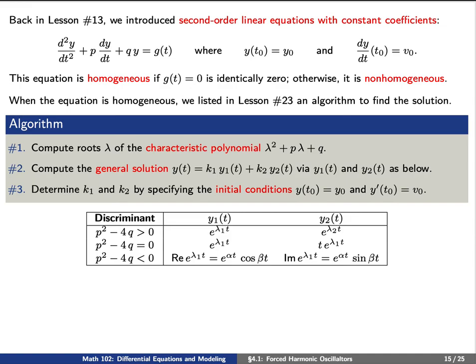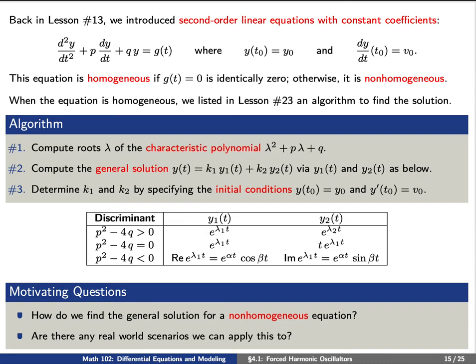When the equation is homogeneous, we found in lesson 23 an algorithm to find the solution to this initial value problem. Step one: compute roots lambda of the characteristic polynomial. Step two: compute the general solution y(t) as a linear combination of two functions y1(t) and y2(t) as listed in the table on the screen. Step three: determine the constants k1 and k2 by specifying the initial conditions y(t0) equals y0 and y'(t0) equals v0.